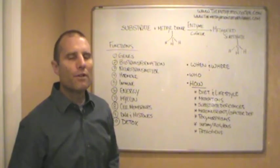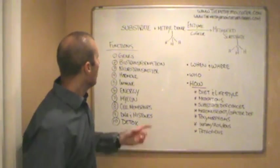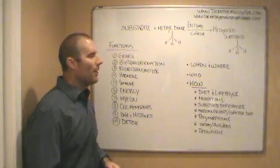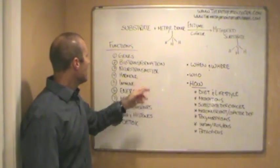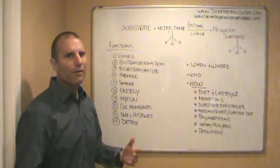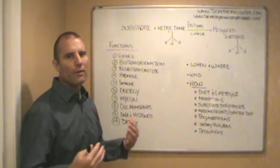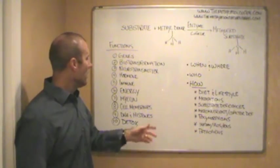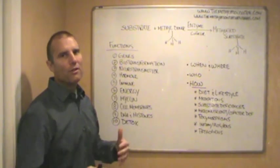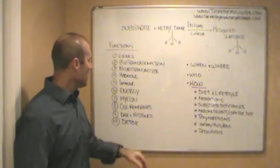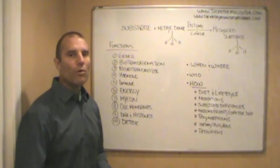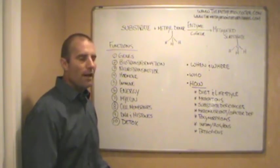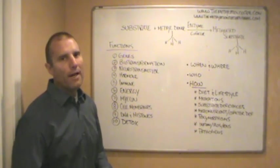So what are some of the specific functions that methylation is involved in? Well, it's involved in gene function. It's involved in biotransformation, changing of chemicals. It's involved in neurotransmitter production and degradation. It's involved in hormone detoxification or hormone clearance. It's involved in the immune system function. It plays a role in energy production. It plays a role in the production of the myelin sheath. It plays an important role in cell membrane health. It plays an important role in DNA and histone synthesis. And a really important role in detoxification.